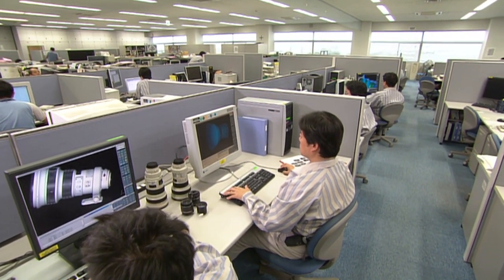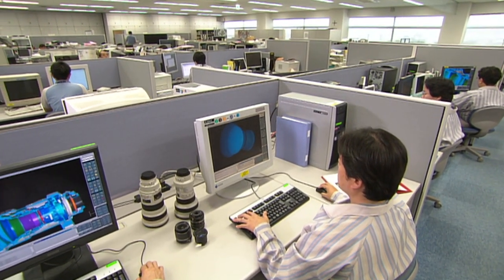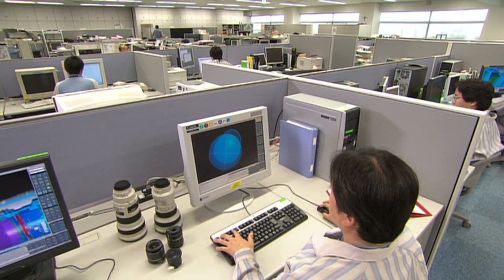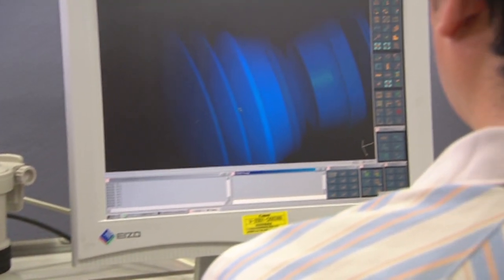Canon's ideal lens is one that projects focus points as true points, free of blurred images, distortion, and color bleeding. To achieve this goal, Canon has been working to solve the problem of aberrations.